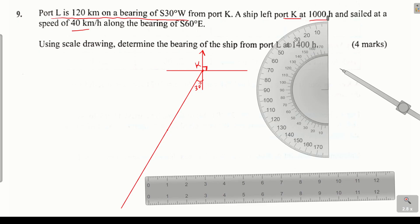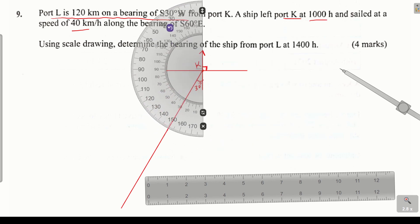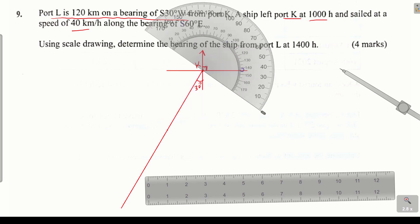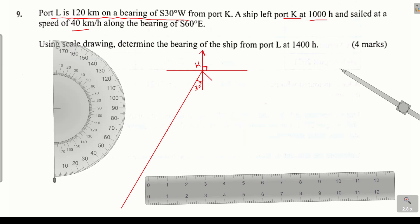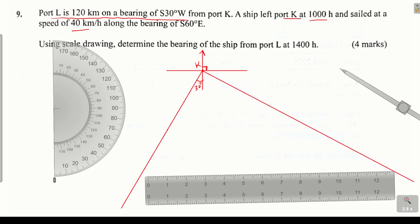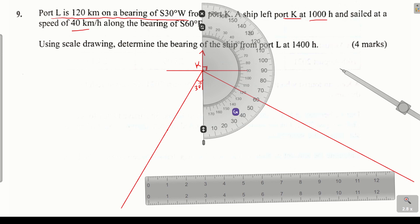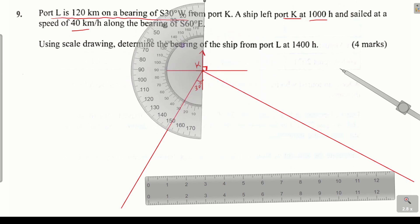Take your protractor again and make sure you are very careful when marking it. Make sure that it passes through that point. You can confirm that it's 60 degrees — that is a 60. And on the other side you can confirm that is indeed 30 degrees, as you can see.